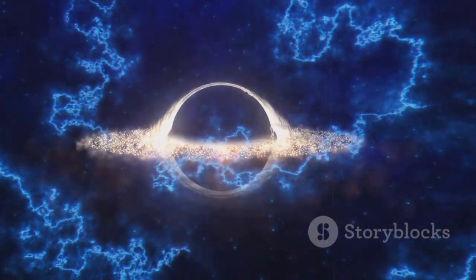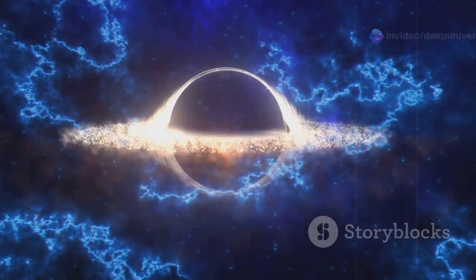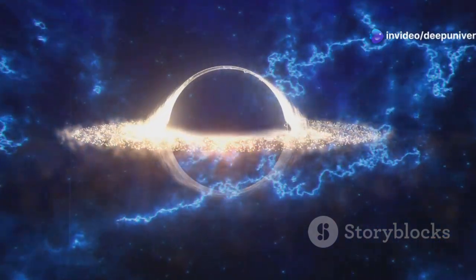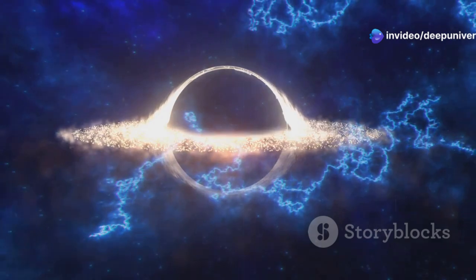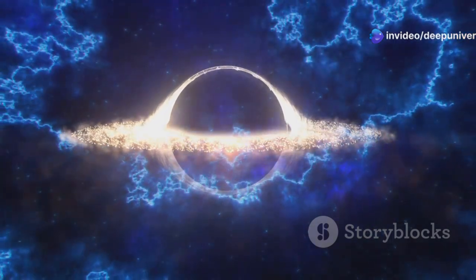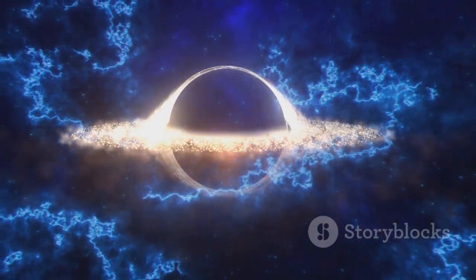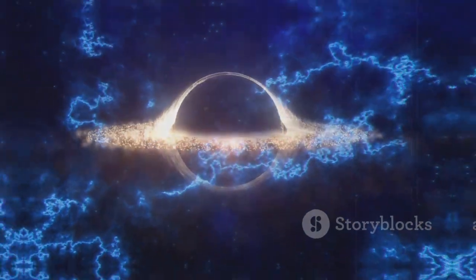As material spirals inwards, it collides, generating friction and releasing enormous amounts of energy in the form of light and heat. This process can make the accretion disk one of the brightest objects in the universe, outshining even entire galaxies.